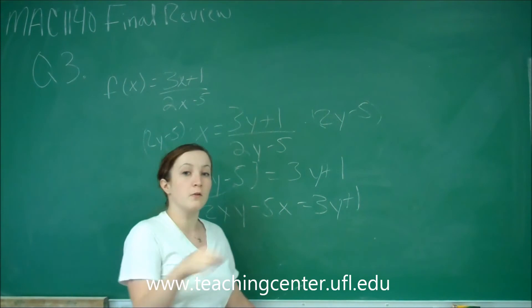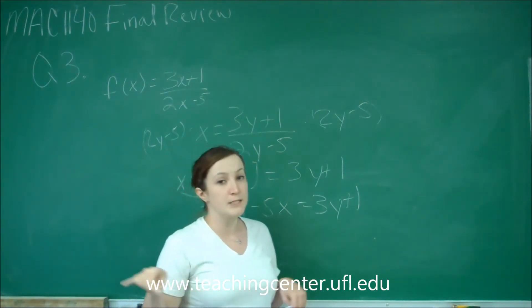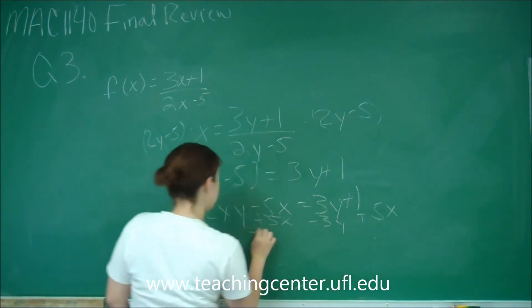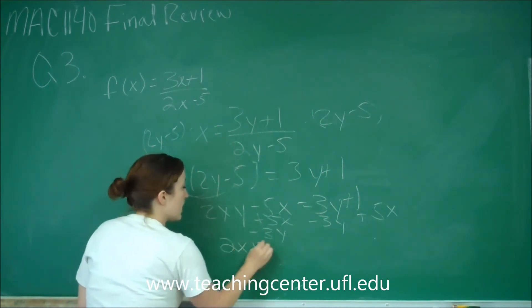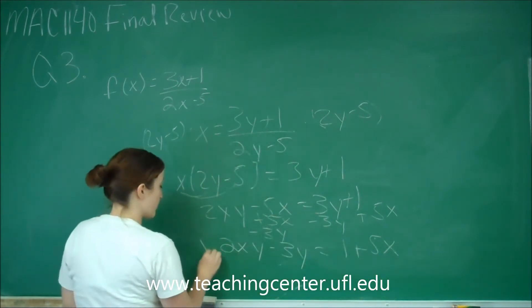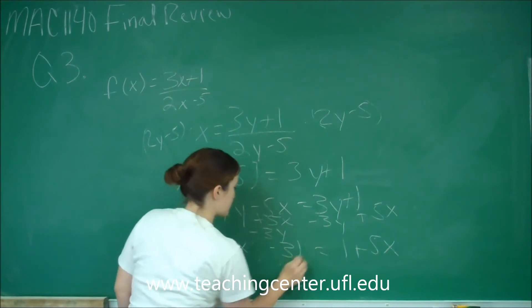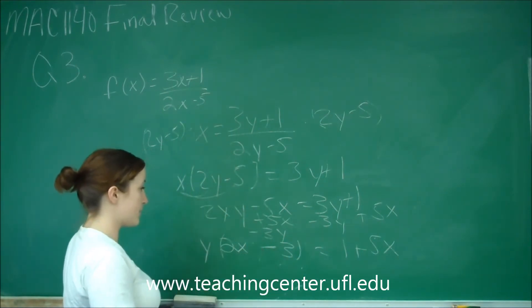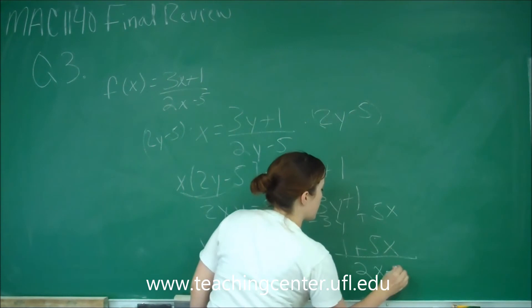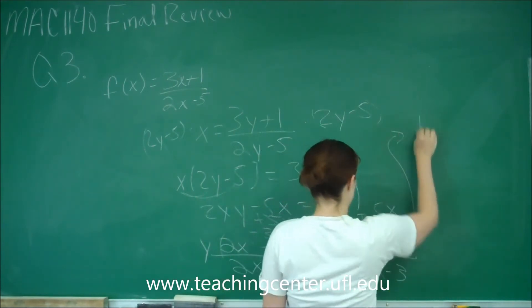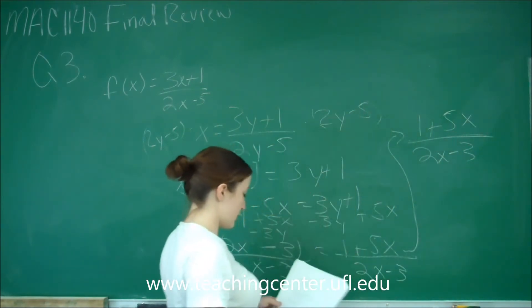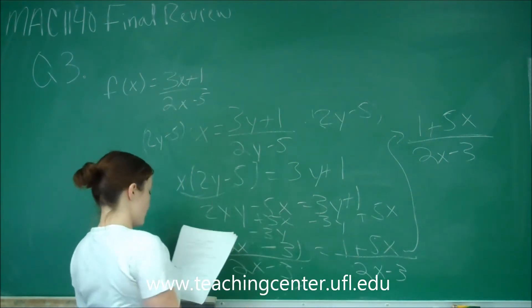Now, because I'm solving for y, I'm going to move all my y terms to one side and all my terms without y to the other. I add 5x to both sides and subtract 3y, getting 2xy − 3y = 1 + 5x. Then I factor out a y: y(2x − 3) = 1 + 5x. Divide both sides by (2x − 3), and we get the inverse function: (1 + 5x) / (2x − 3).